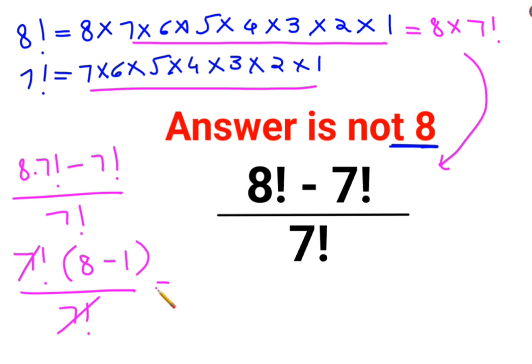So this and this will get cancelled. The answer for this question is 8 minus 1, which is just 7.